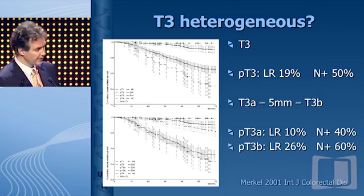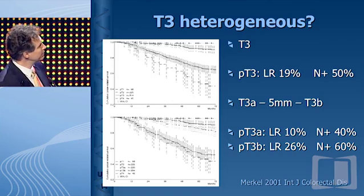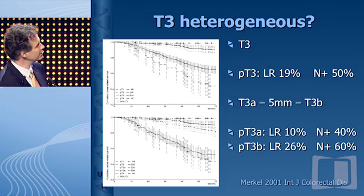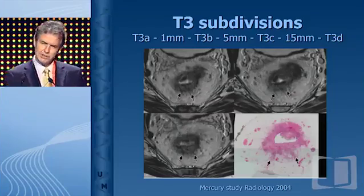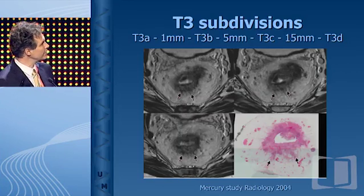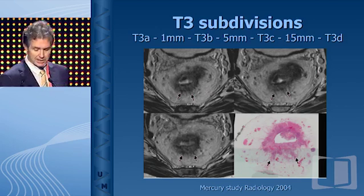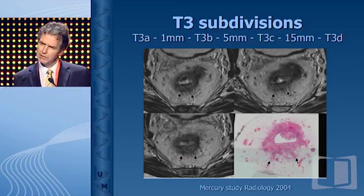Here is a paper on T3 versus prognosis. T3 is in between T1/T2 and T4, but if you split T3 into superficial — with a cutoff of five millimeters — you see that superficial T3 behaves like T2, and more advanced T3 behaves like T4. The Mercury study tried to put that into use, because with MRI you can actually measure that distance, and it correlates with pathology. It's reasonably reliable, and you can subclassify T3, which may actually be more relevant than the T2 versus T3 distinction.